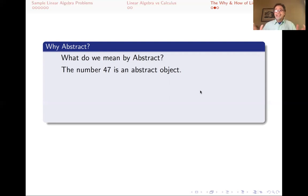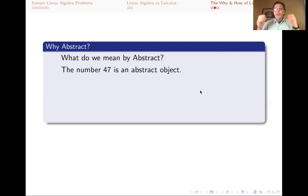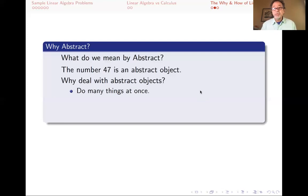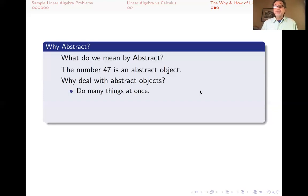Someone looked at these different examples and decided there's some good to come out of taking this concept of 47 and making it up — saying that the thing 47 cows, 47 trees, and 47 cars have in common is their number, and we're going to call that 47. Why would that be useful? First of all, you can do many things at once. If you want to know what 47 cars together with 3 cars are, and another day you want to know 47 trees plus 3 trees, or 47 cows plus 3 cows, instead of doing those separately and getting distracted by details — are the trees big or small, how heavy are the cows — you can just focus on the abstract: 47 plus 3 is 50. And then that applies to cows, trees, cars, and many other situations you hadn't thought about.